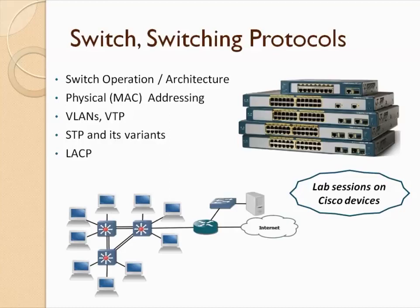In today's networks, especially at the enterprise level, you need a lot of redundancy. If a particular path or link fails, you should have an alternate route. But redundancy brings what you call looping — a broadcast packet can loop endlessly when there's more than one path to a destination. I'll explain how that occurs and how STP prevents it, covering all its variants: Rapid STP, MSTP, and per-VLAN STP.